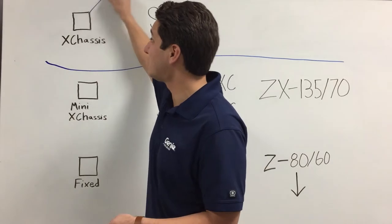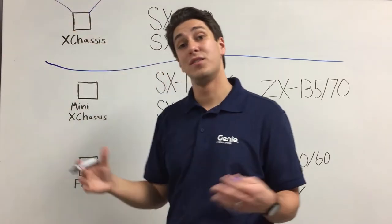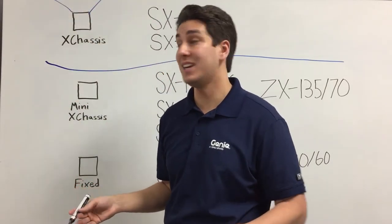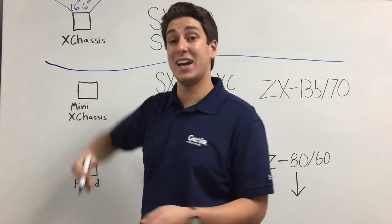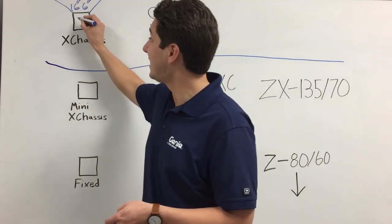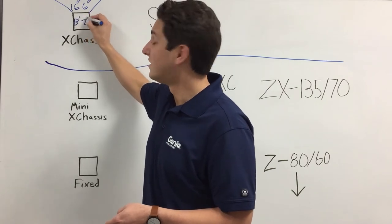This uses a pivot axle system that when fully extended for working at height is 16 feet, 6 inches, and when retracted for transport is a narrow 8 feet, 2 inches.